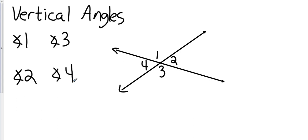Vertical angles have a very special relationship — they are congruent, or equal to each other. We're going to use the congruent symbol a lot in geometry; it's just an equal sign with a little sideways S on top. So angle 1 and angle 3 are congruent, and angle 2 and angle 4 are congruent. That is vertical angles.